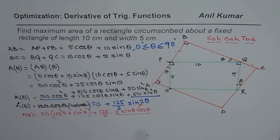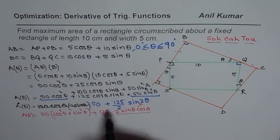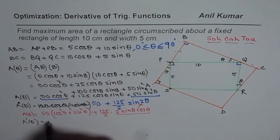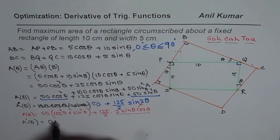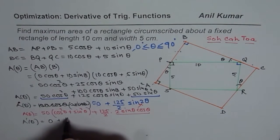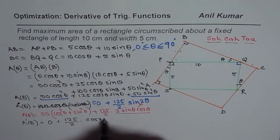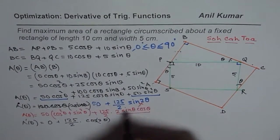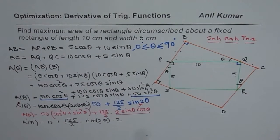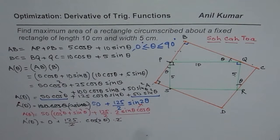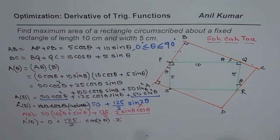Now let us find the derivative of this simpler function. The derivative of 50 is 0. For (125/2) sin 2 theta, the derivative is (125/2) times cos 2 theta times 2. The 2's cancel. So the first derivative A'(theta) equals 125 cos 2 theta.